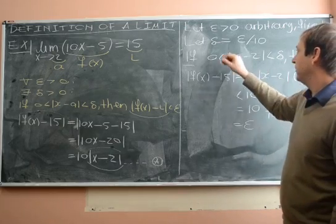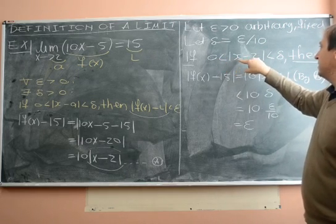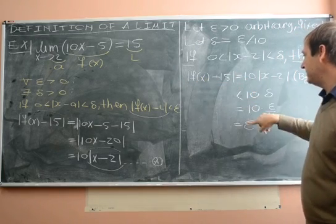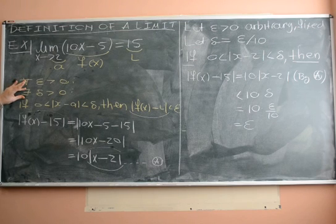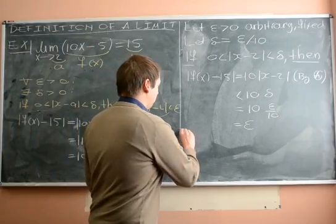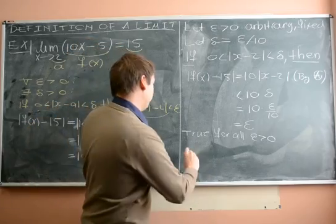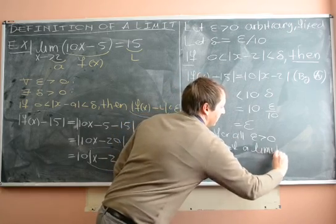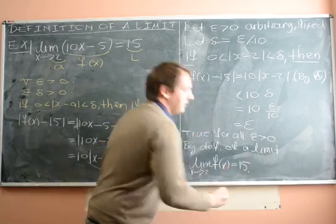So what have we proven? We've proven that for any epsilon, if we let delta be epsilon over 10, then if 0 less than absolute value x minus 2 less than delta, then absolute value of f of x minus 15 less than epsilon. That's the definition. 'There exists' here. There exists a delta bigger than 0. We must find the delta, and we found the delta. Now this is true for all epsilon bigger than 0. So by the definition of a limit, we have that limit as x goes to 2 of f of x is 15.